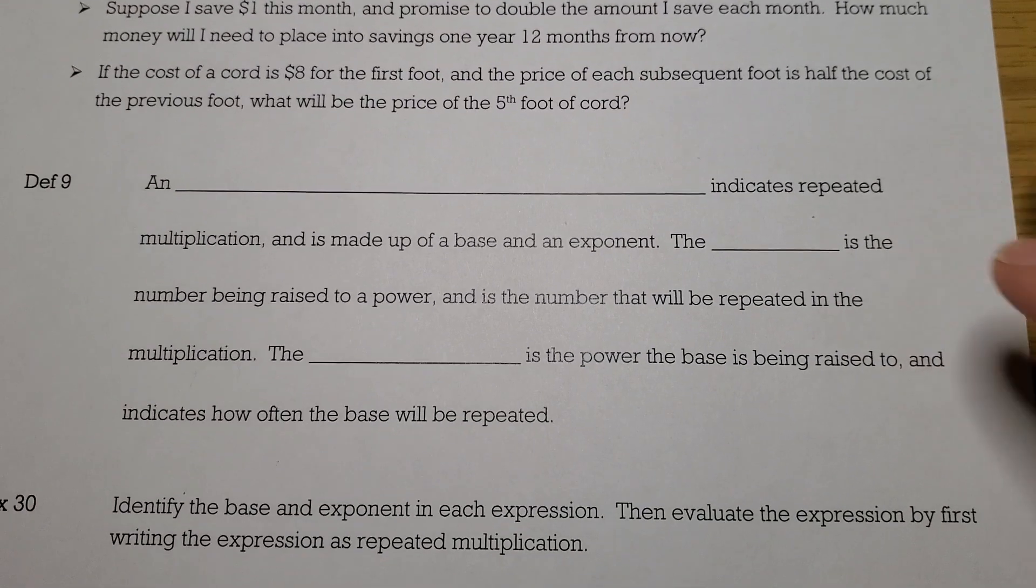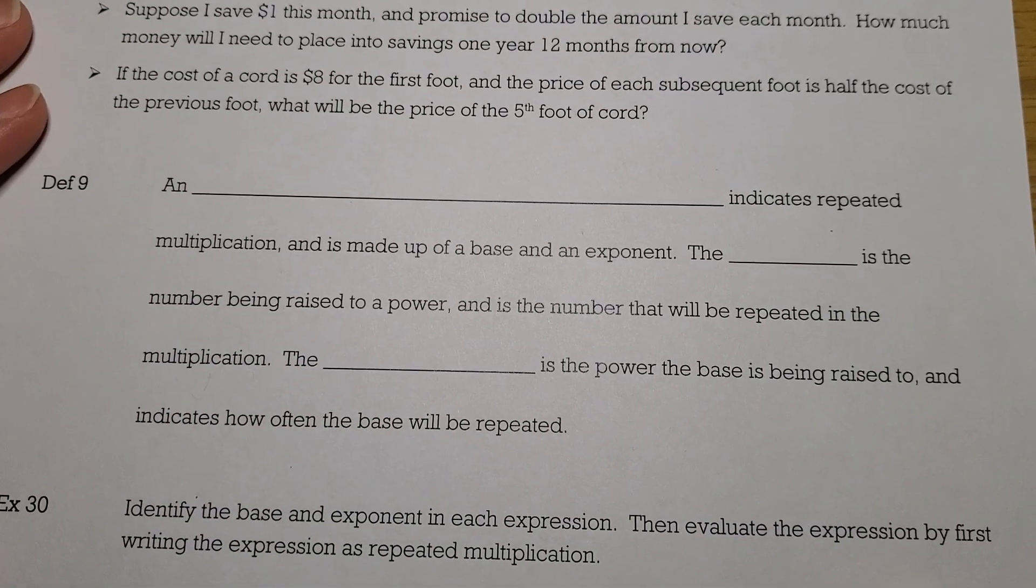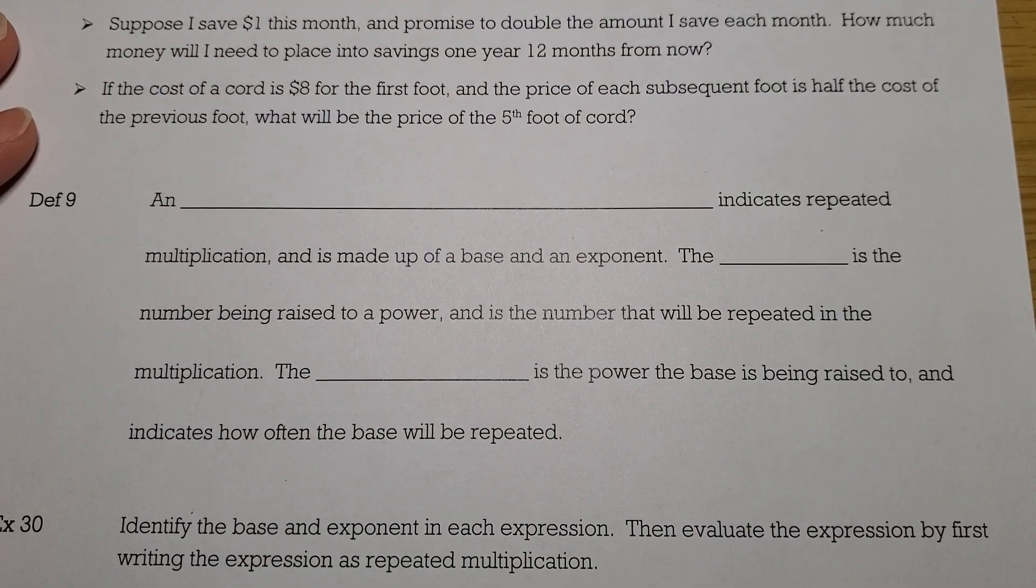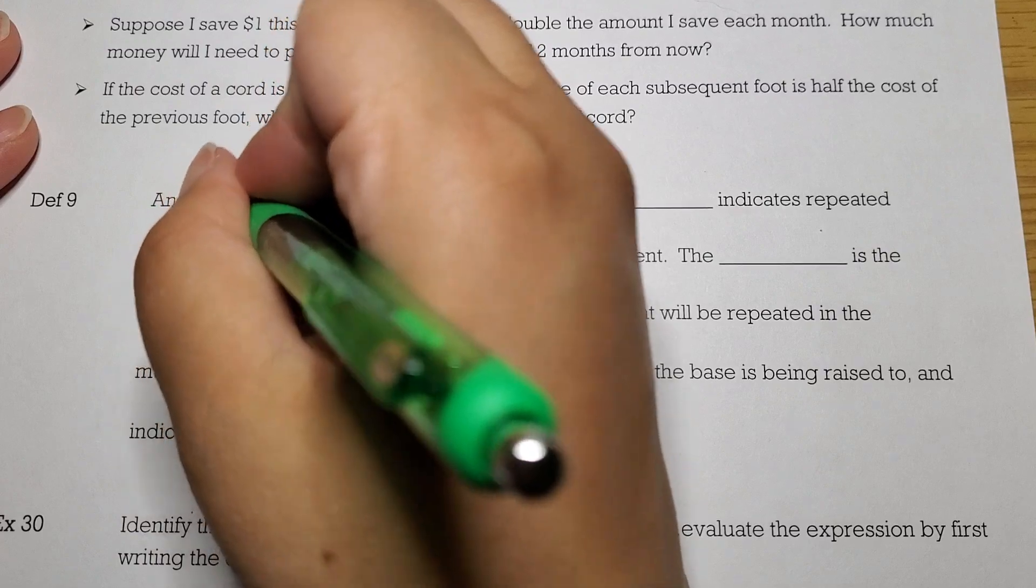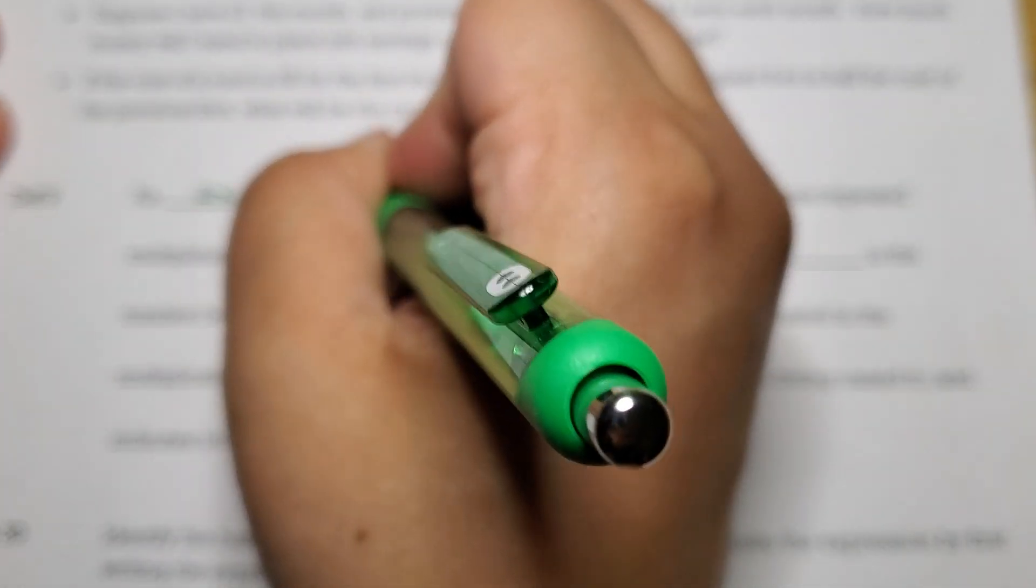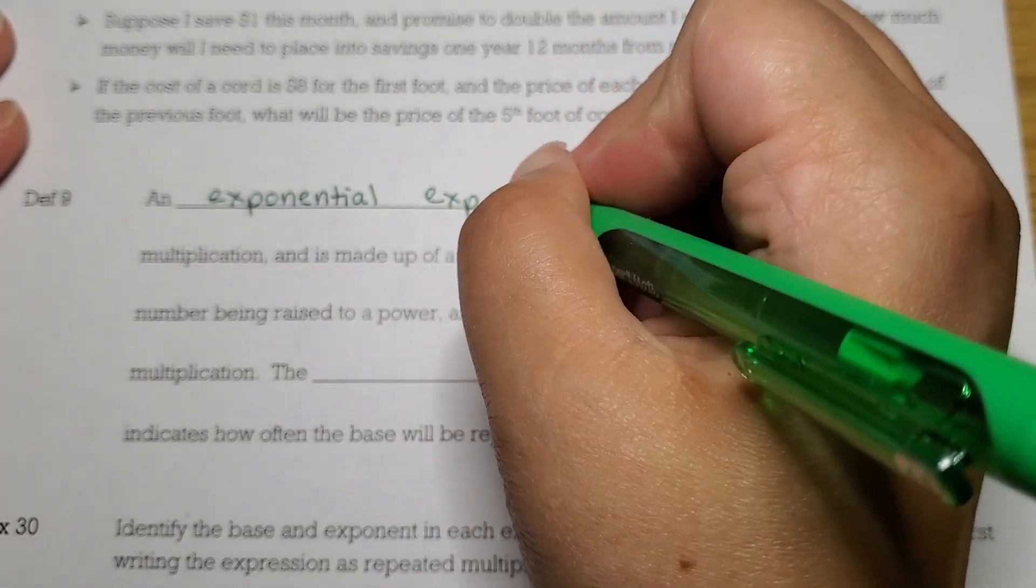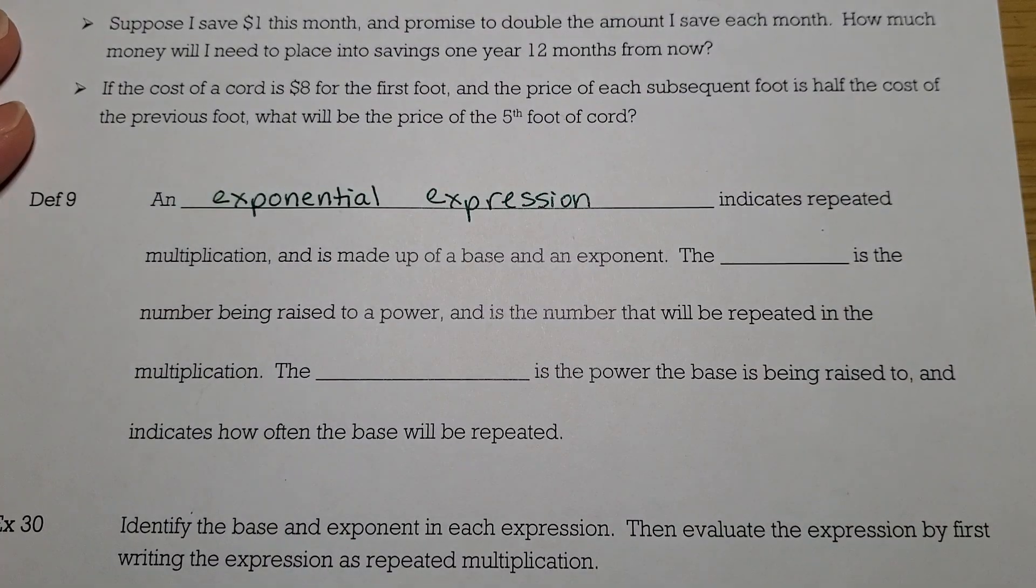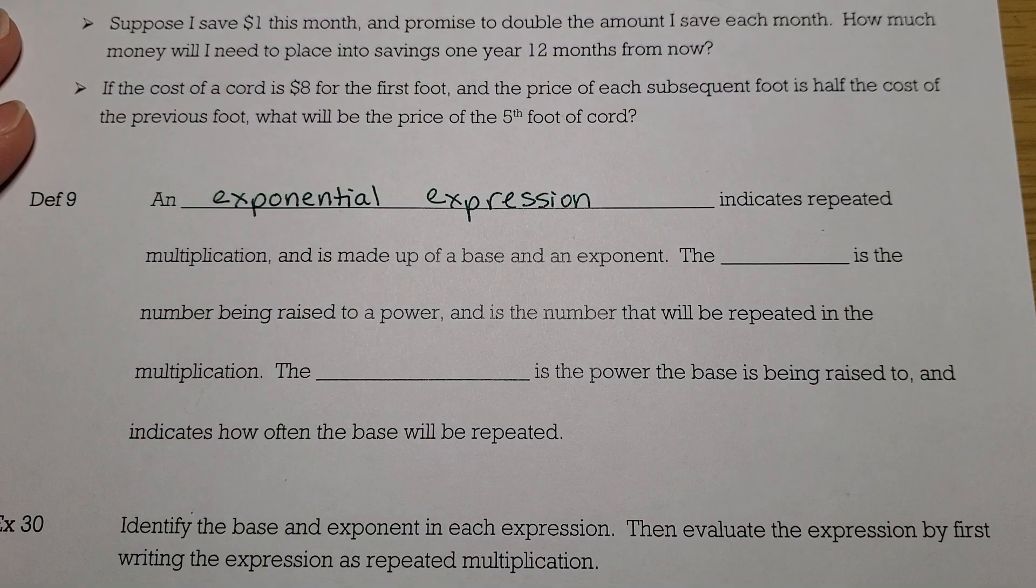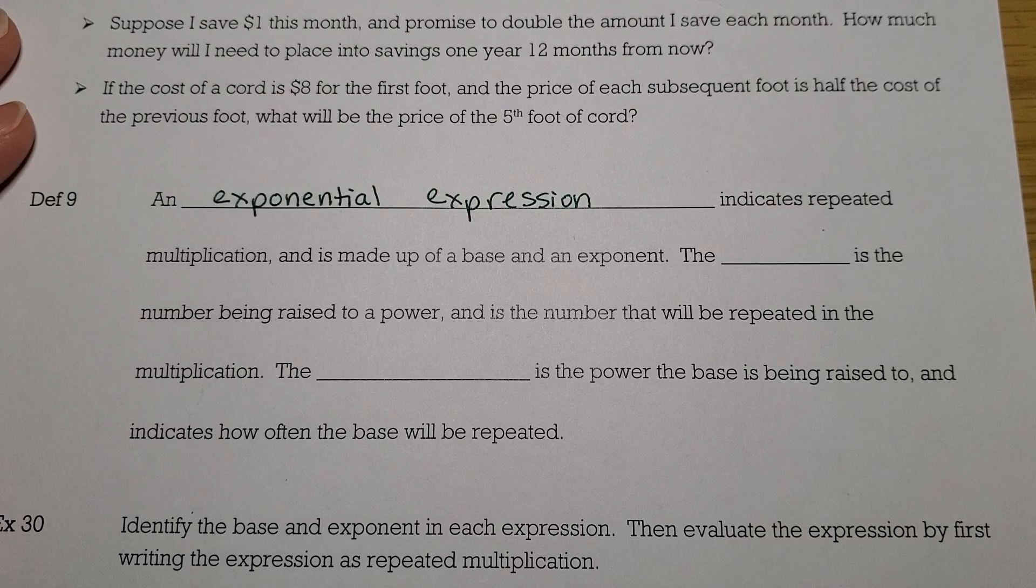So all of these examples are using exponents. Let's define what we mean when we say exponents. An exponential expression indicates that you have repeated multiplication, and it's made up of both a base and an exponent.